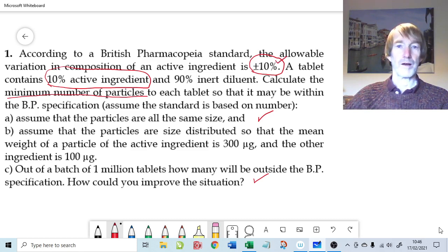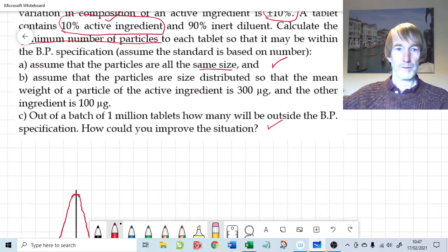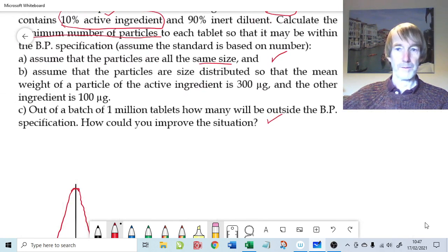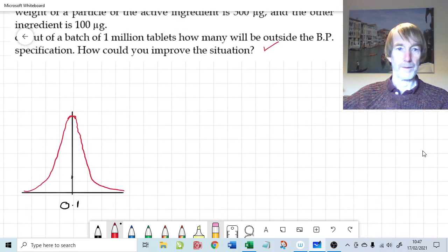The question asks to calculate the minimum number of particles in order to achieve this specification of just 10% variation around an active ingredient content of 10%. Let's assume the particles are all the same size and then calculate the number of particles that is needed to achieve this specification.